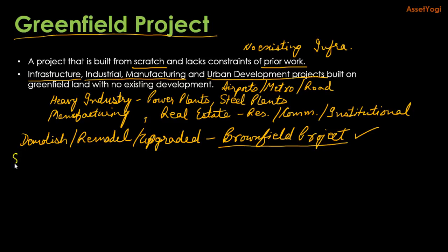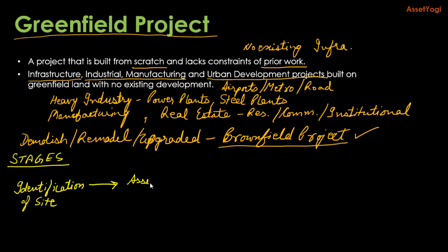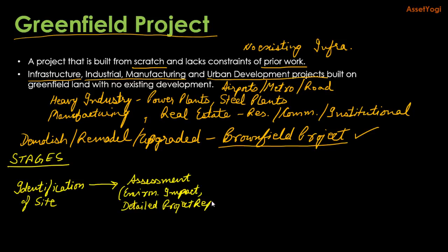Now let us understand what are the stages involved in a greenfield project. It starts with the identification of a greenfield site where a project can be developed. Then it is followed by assessment of the site and project — you will have to carry out the environment impact assessment. Then you have to make a detailed project report, or DPR, which will include all the master plans, layouts, and the conditions of the site and how you are going to develop the project. Then funding has to be tied up — if it is a state project, it can be funded by the state or through public-private partnership; if it is a private project, investment has to be arranged from private resources.